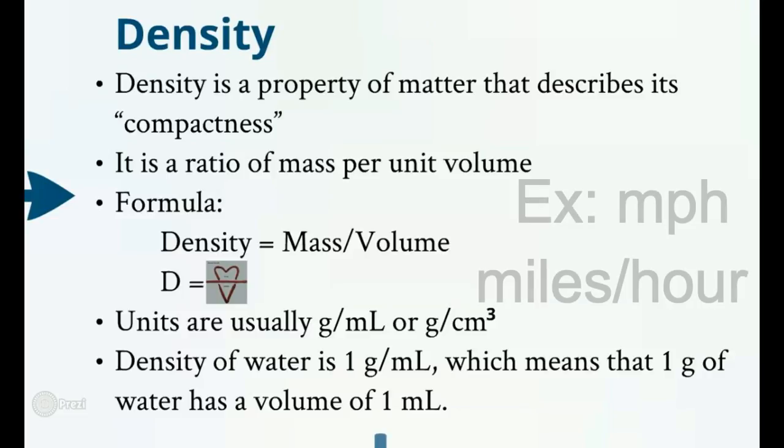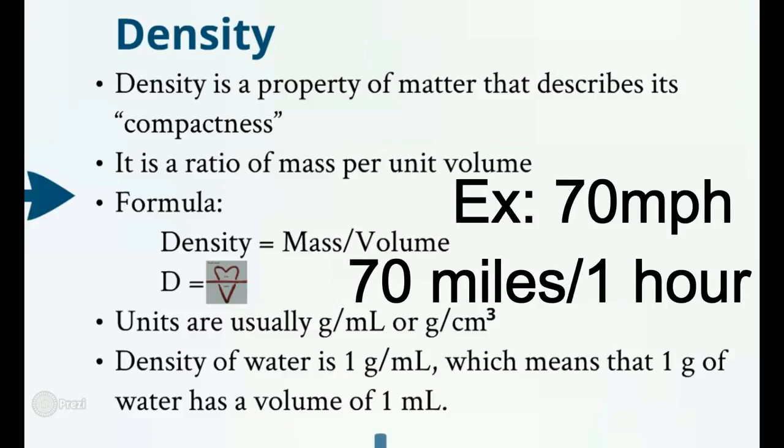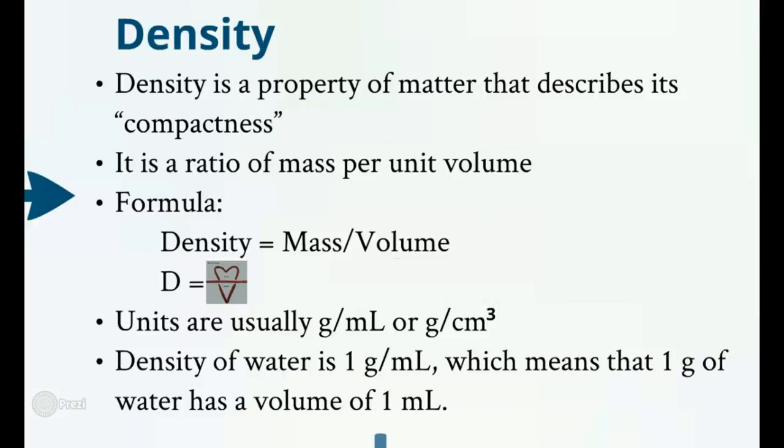Miles per hour, right? So miles, that's a distance. Hour is time, distance over time. So if you go 70 miles per hour, you will cover 70 miles in one hour. That's what that means. Density is exactly the same way. There's no one unit for this. There are actually two. It's a per thing. It is actually going to be grams per milliliter or grams per centimeter cubed.